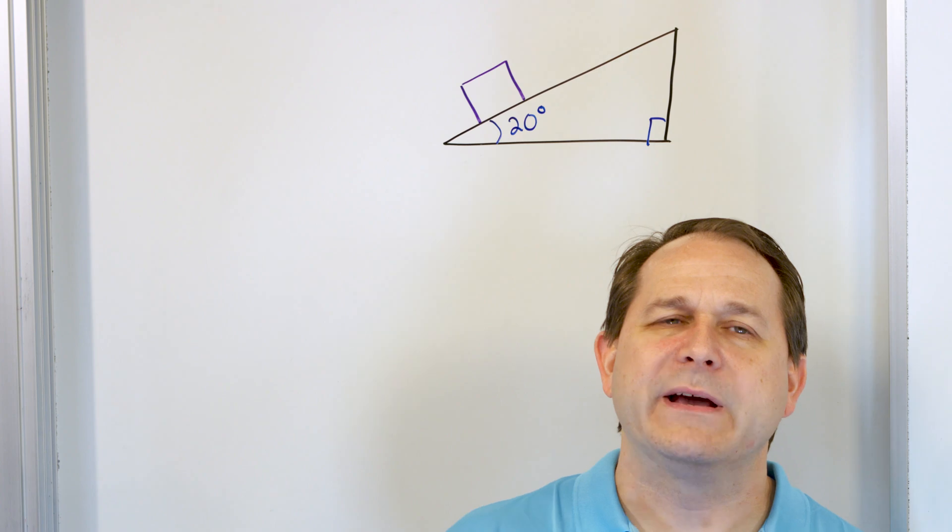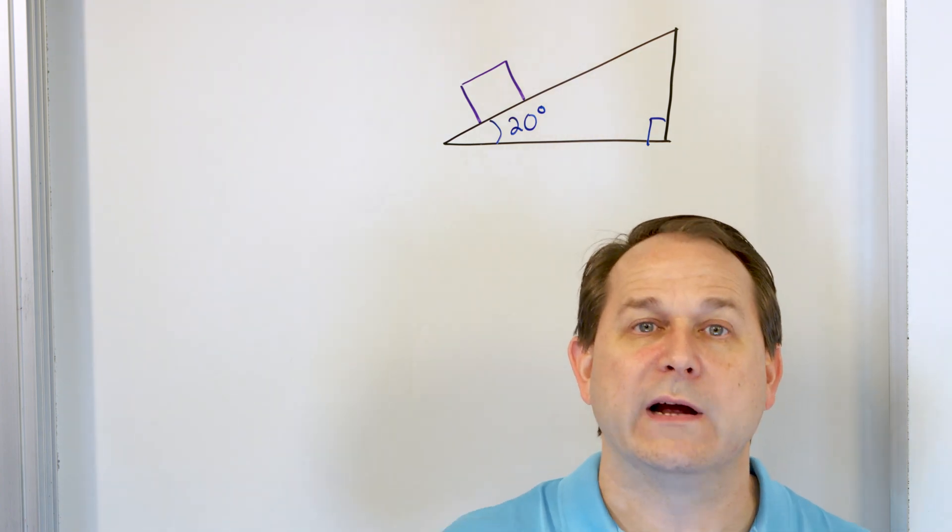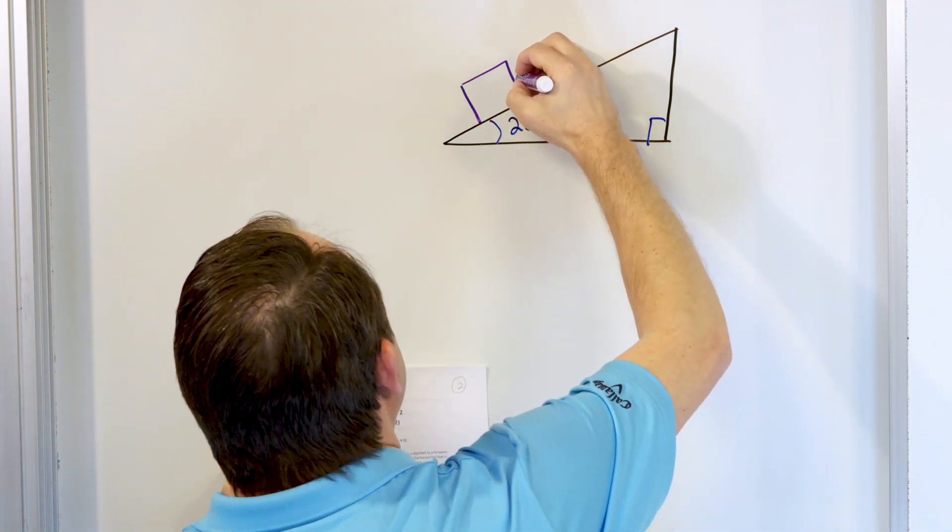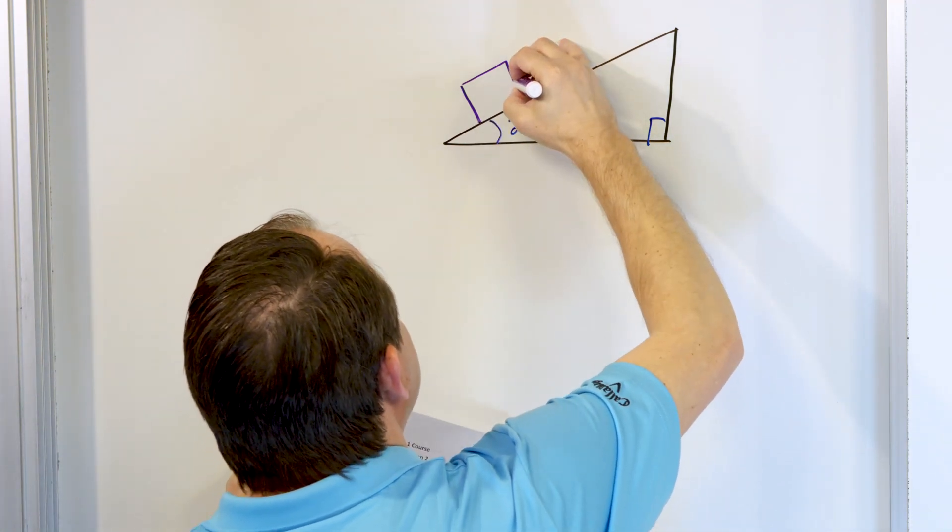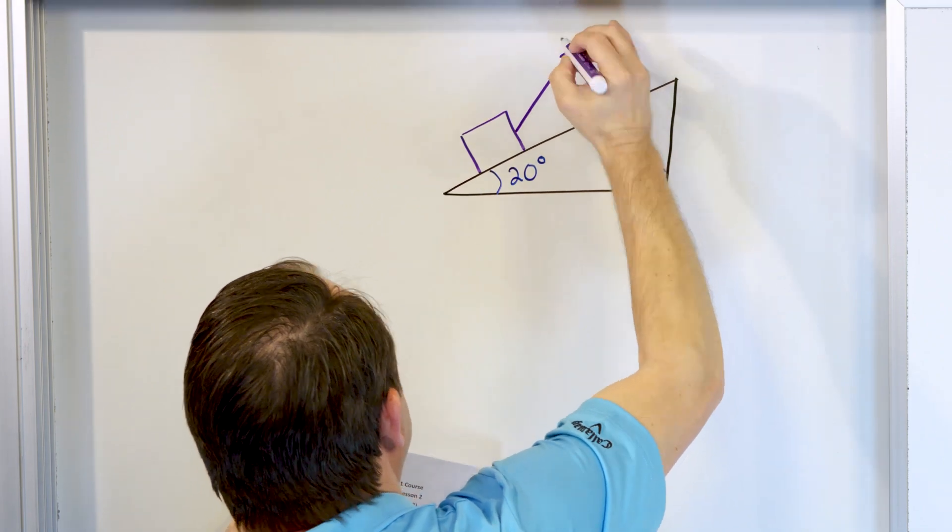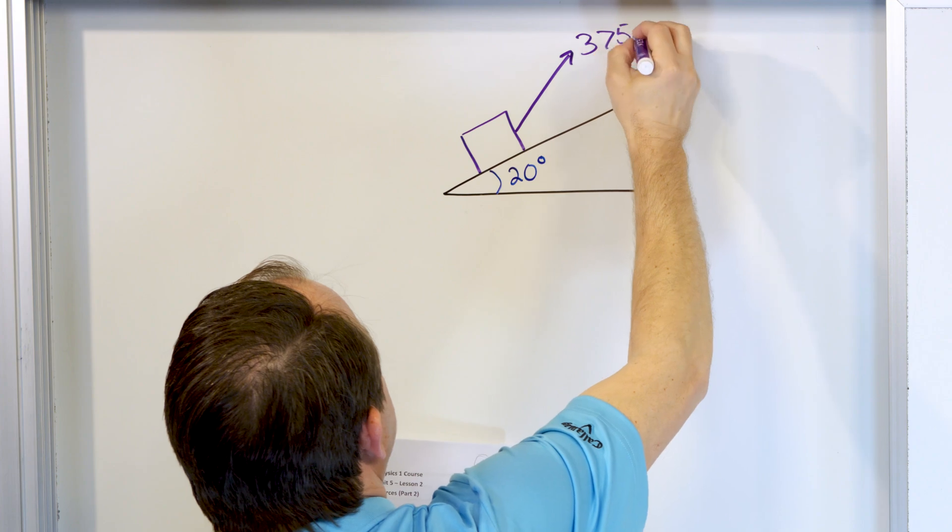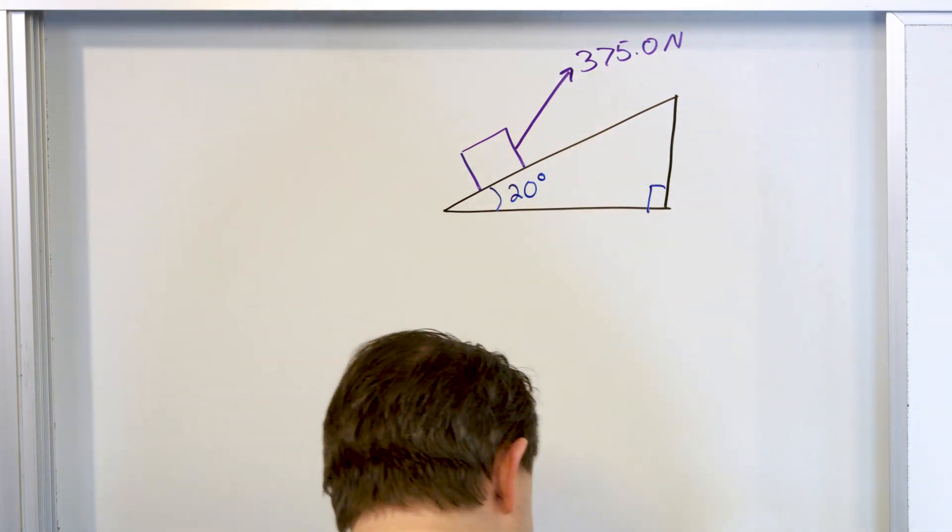But that 30 degree angle is above the horizontal that's parallel with the slope of the ramp. So you have to read it because it's telling you how the angle is situated relative to the ramp. So basically what we have here is we have some kind of like tension force, which we can draw as a vector, right? It's 375.0 newtons.